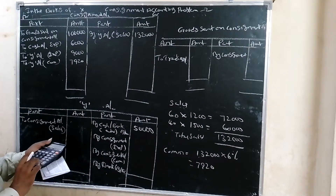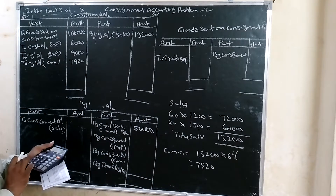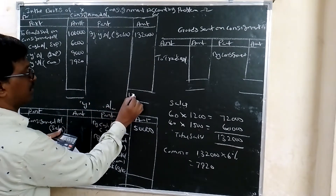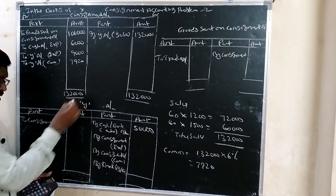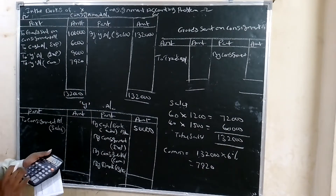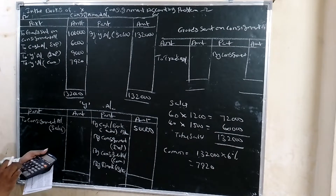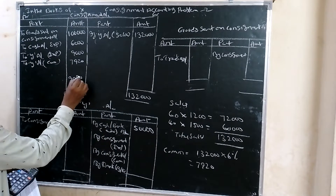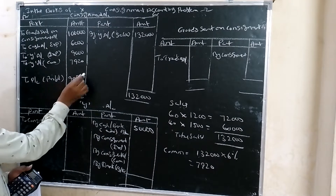Total debits on consignment account: 1,22,920. Total sales credited: 1,32,000. Profit = 1,32,000 minus 1,22,920 = 9,080 rupees profit, transferred to Profit and Loss account.